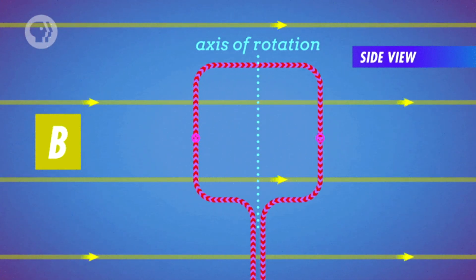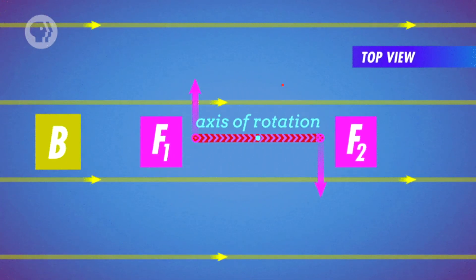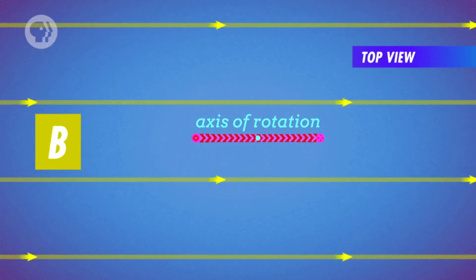Let's take a look at this loop of wire. The horizontal parts of the loop are parallel to the magnetic field, so it won't exert a force on them. But the vertical parts of the loop are perpendicular to the magnetic field, so it will exert a force on them.